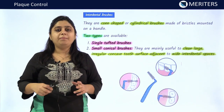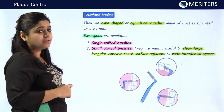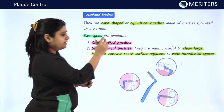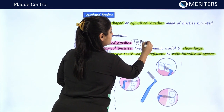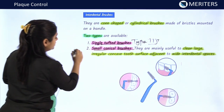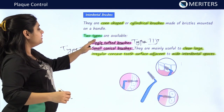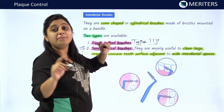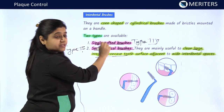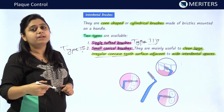Interdental brushes may be cone-shaped or cylindrical. There are two types: single-tufted brushes, used in type 3 embrasures, and small conical toothbrushes, used in type 2 embrasures. These two types of interdental brushes are mainly used to clean large, irregular, concave surfaces of the tooth so that plaque in these areas can be easily removed.